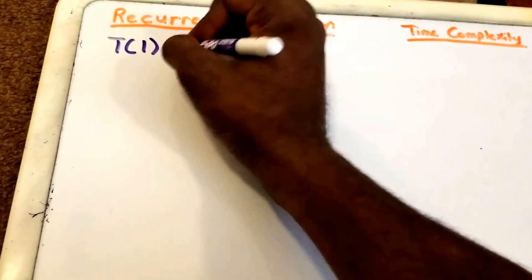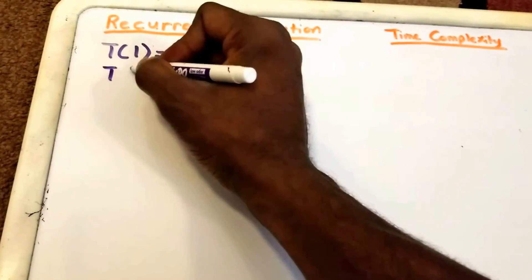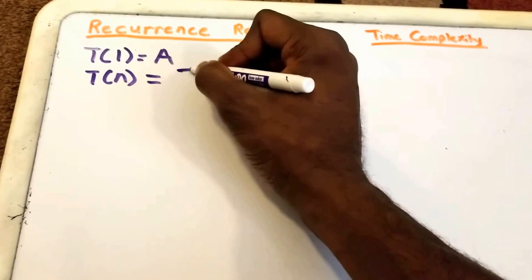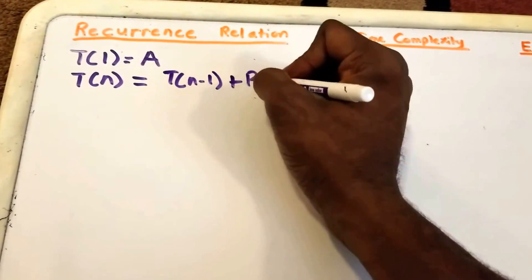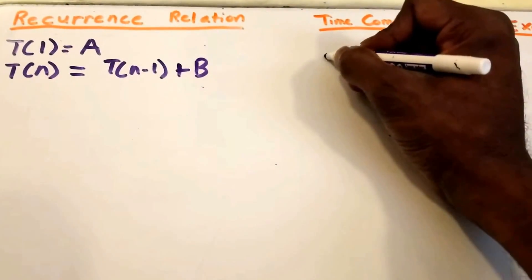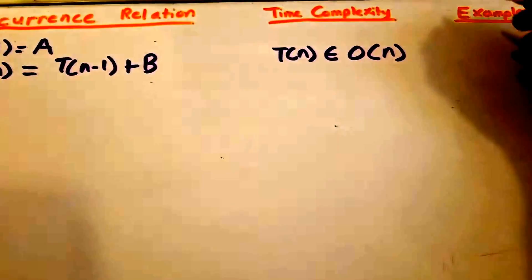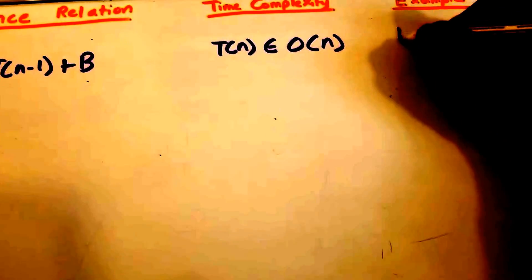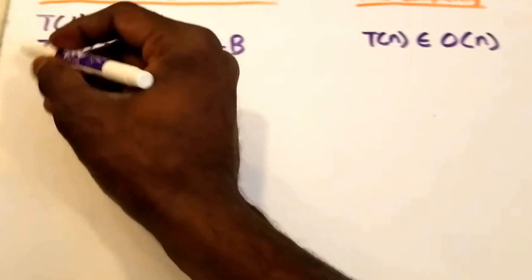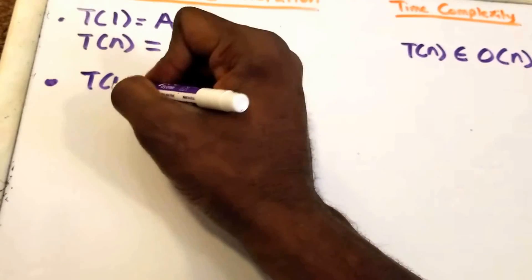First up we have a base case: T(1) = a, where a is some non-negative constant. Then we have a recurrence relation T(n) = T(n-1) + B, where B is some non-negative integer value. That means T(n) belongs to O(n), and an example of this would be the linear search algorithm.